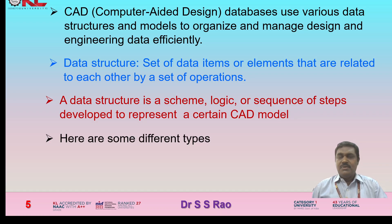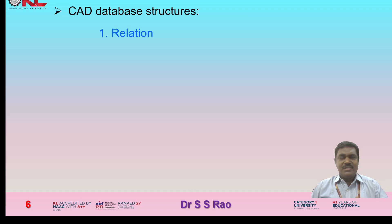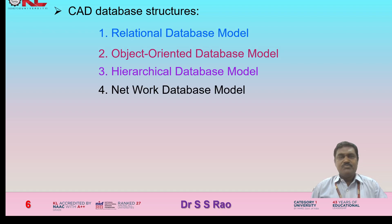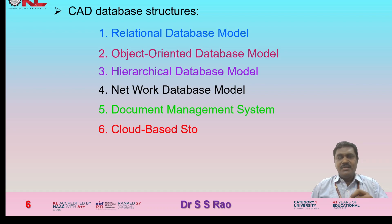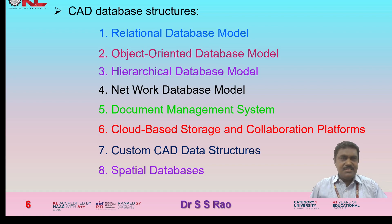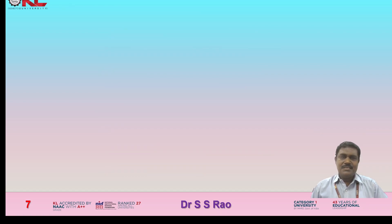Here are different types of CAD database structures: first is the relational database model, second is the object-oriented database model, third is the hierarchical database model, fourth is the network database model, fifth is a document management system, sixth is cloud-based storage and collaboration platforms, seventh is custom CAD database structures, and eighth is spatial databases. In this video I will explain in detail about the first four database structures.